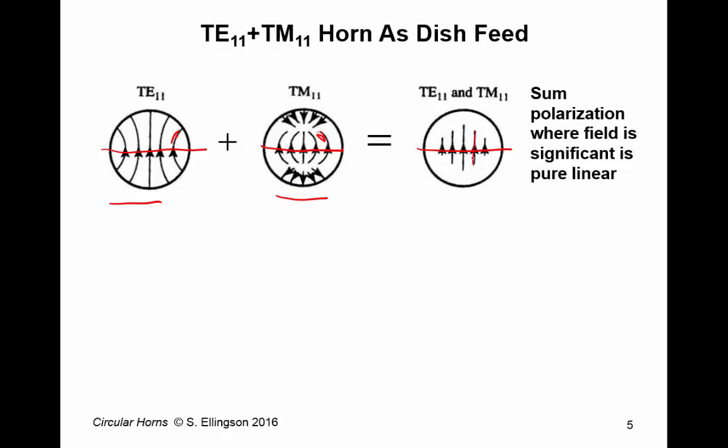So, in the center of the waveguide, we get field lines which are straight up and down, whereas in TE-1-1, they're curved, and TM-1-1, they're curved.